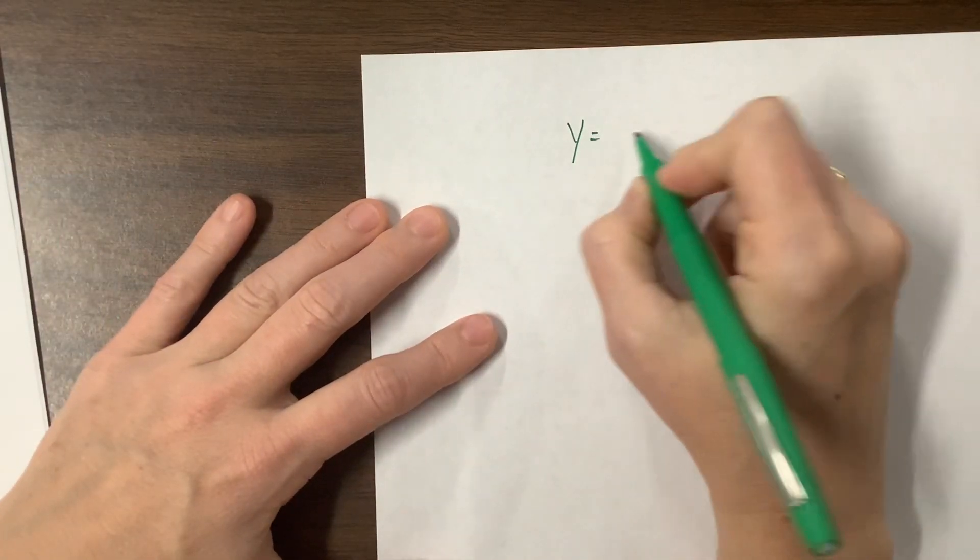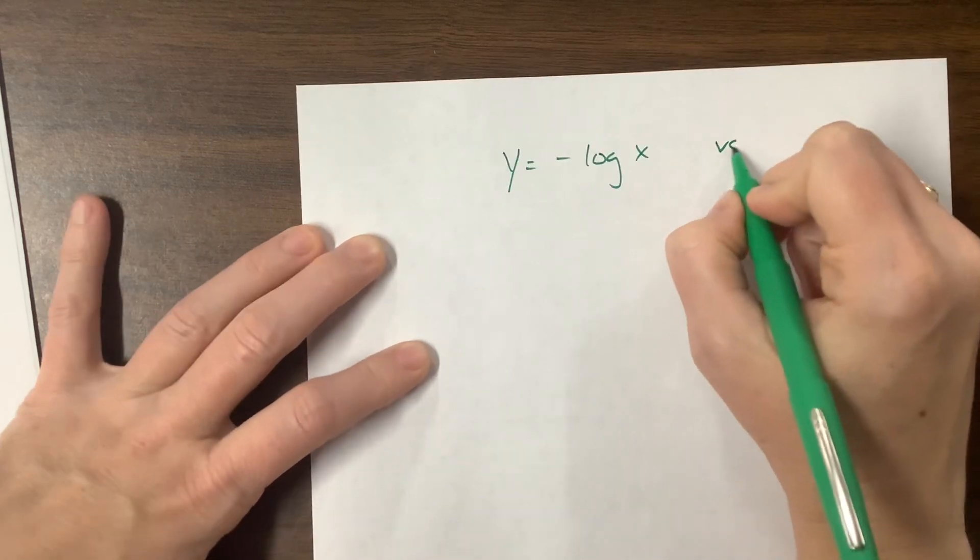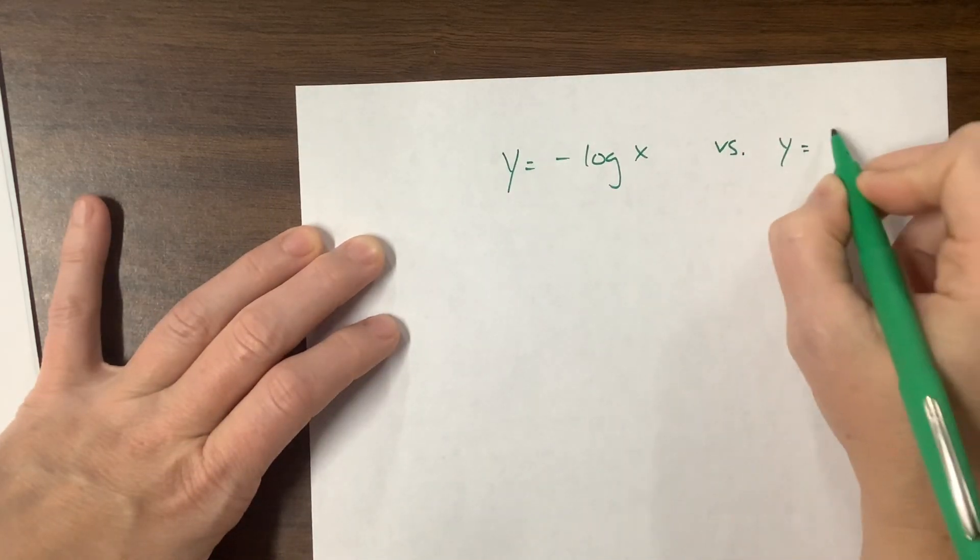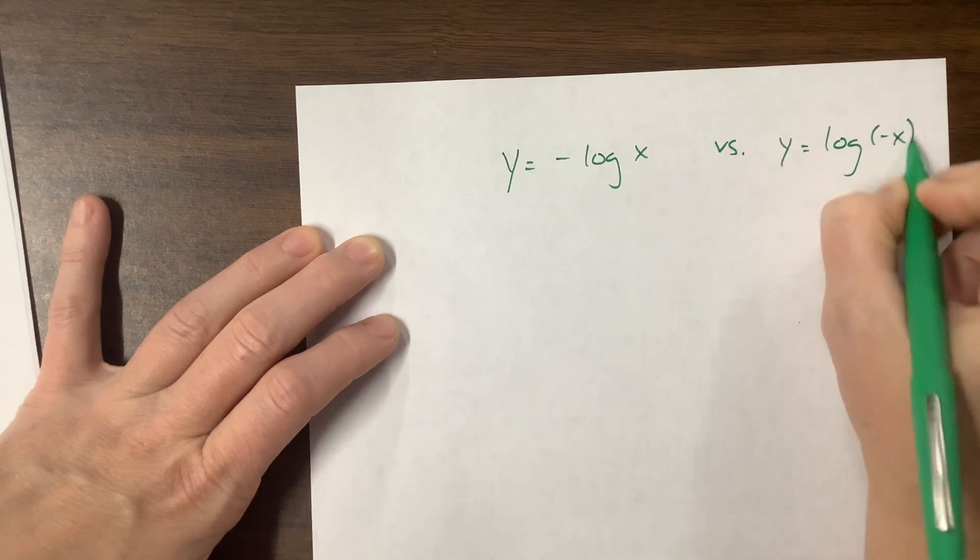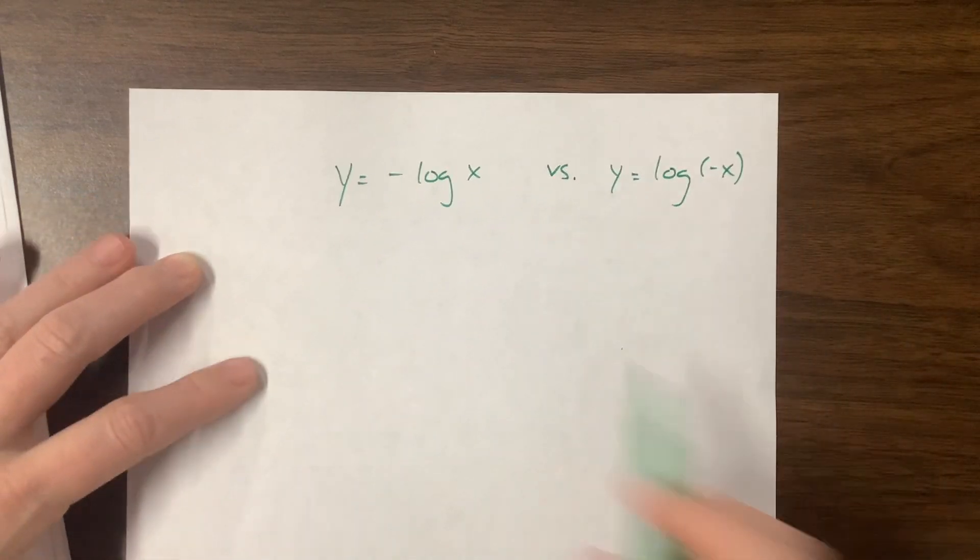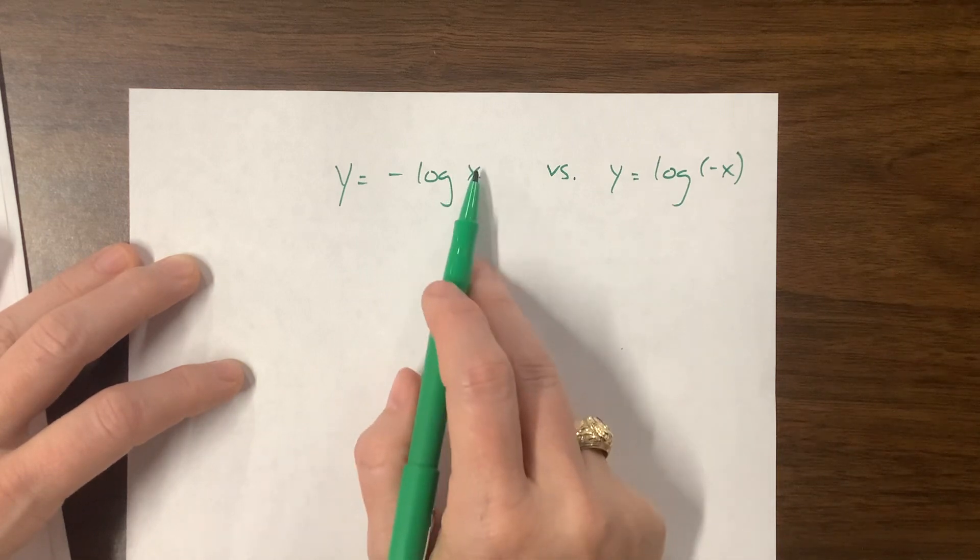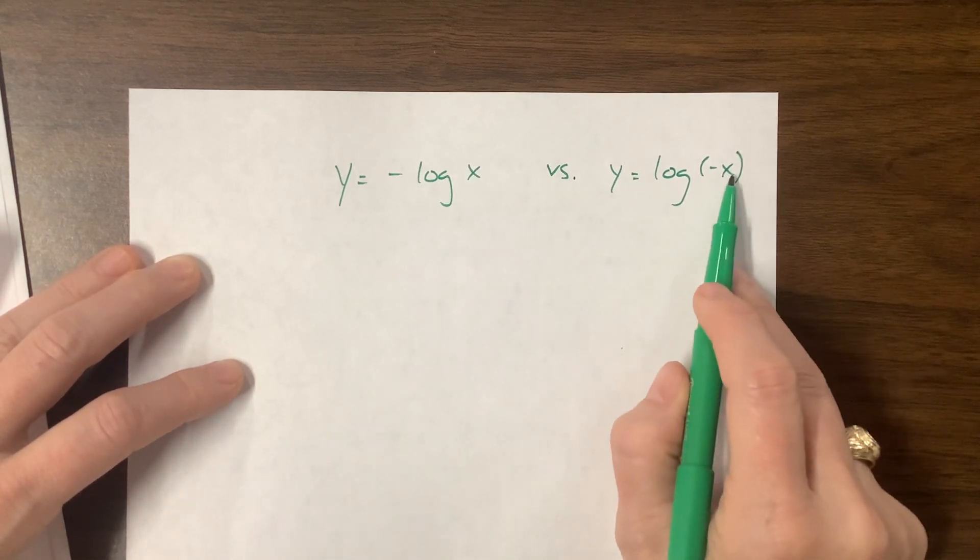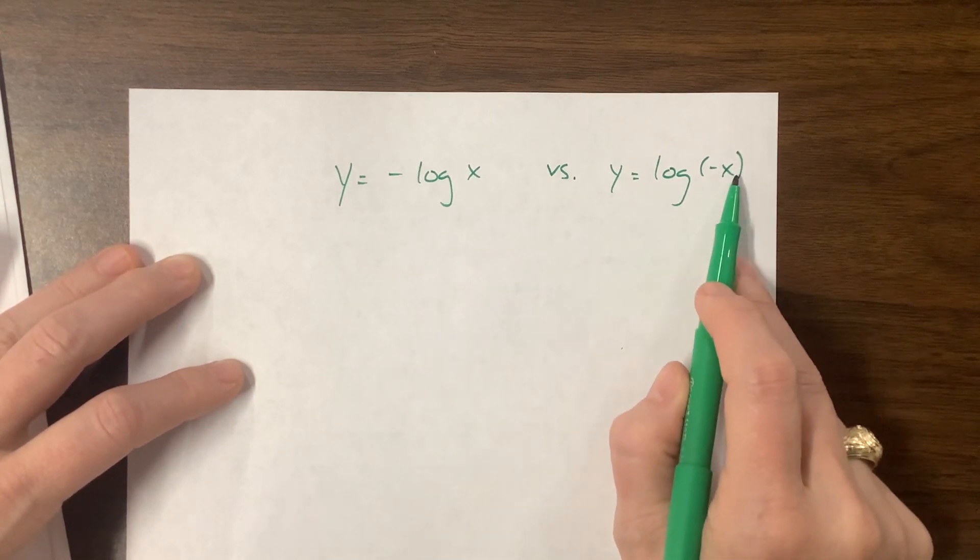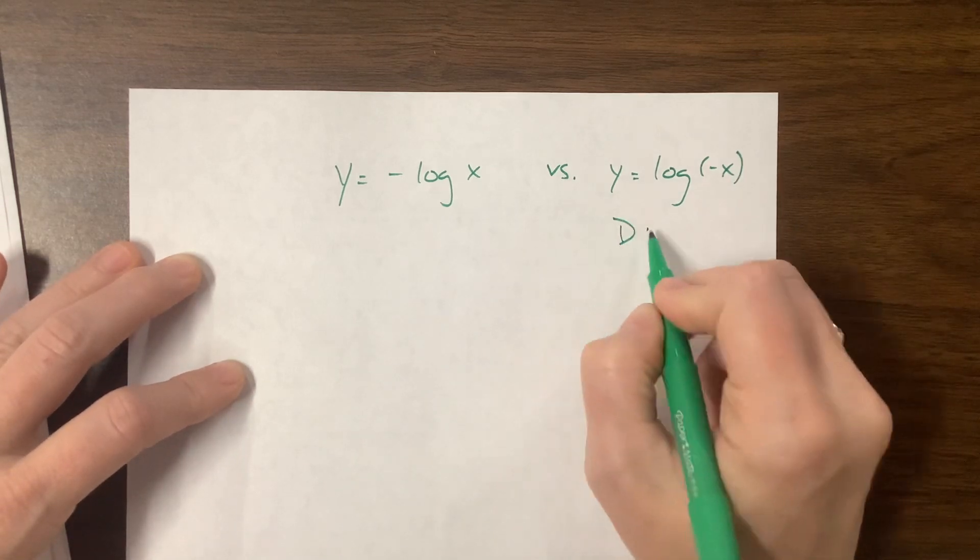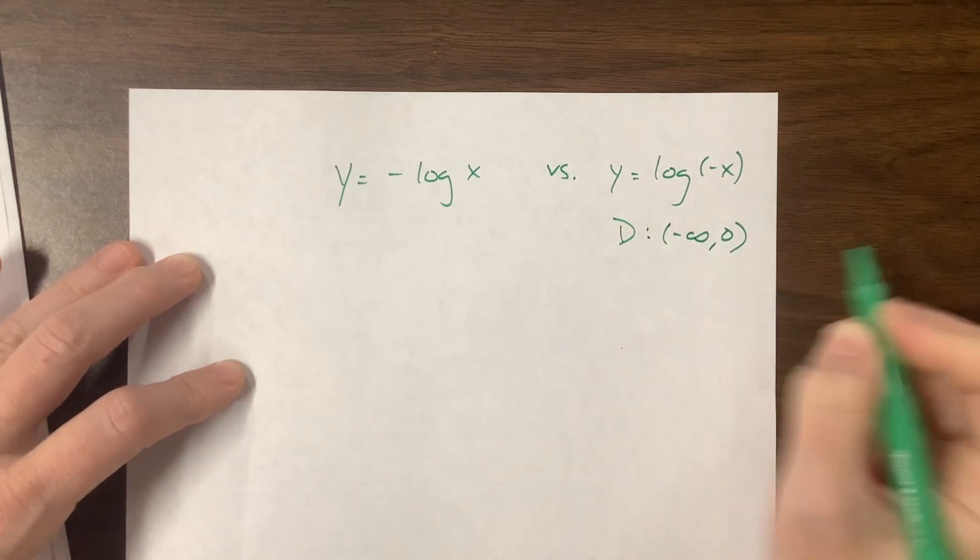Let me show you. If we forget, we could compare a negative log of x versus a y equals a log of negative x. If we forget which is going to reflect which way, this one does not change the domain. So we can still only plug in positive values. This changes the domain. I now can only plug in negative values. So now my domain is going to go from negative infinity to zero this way.